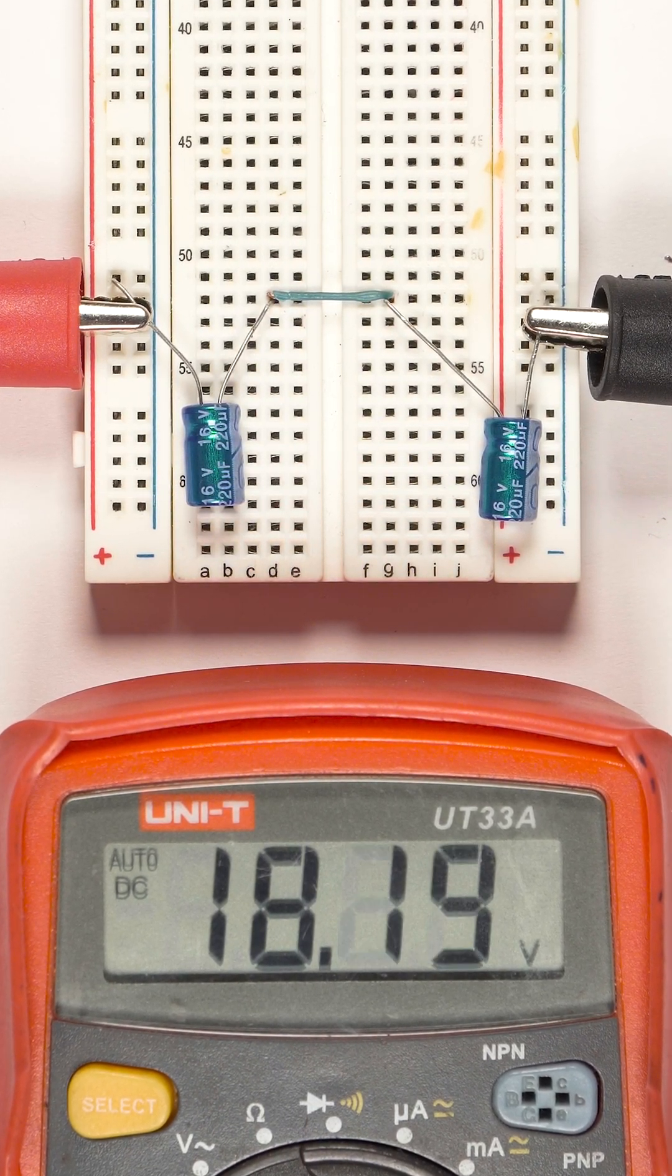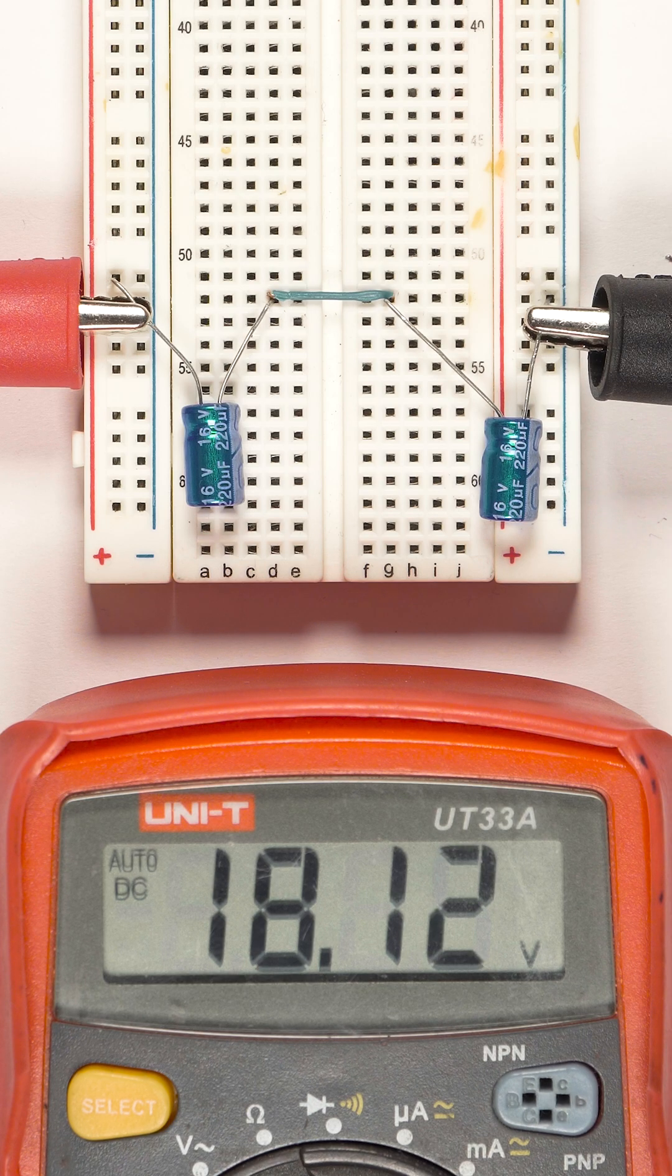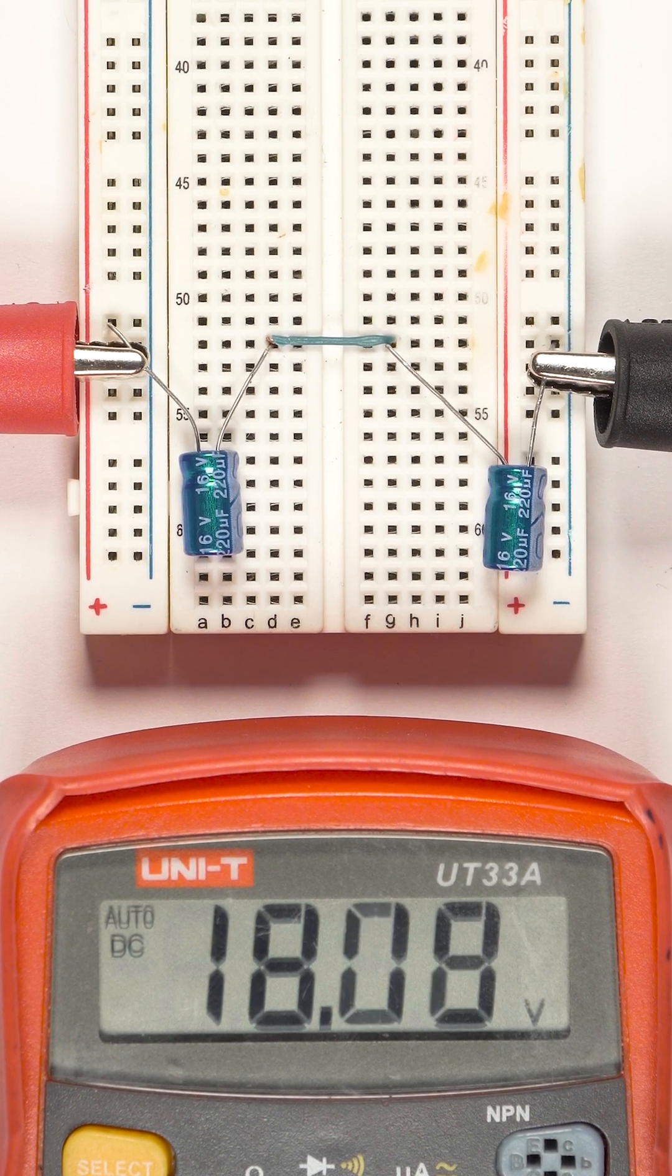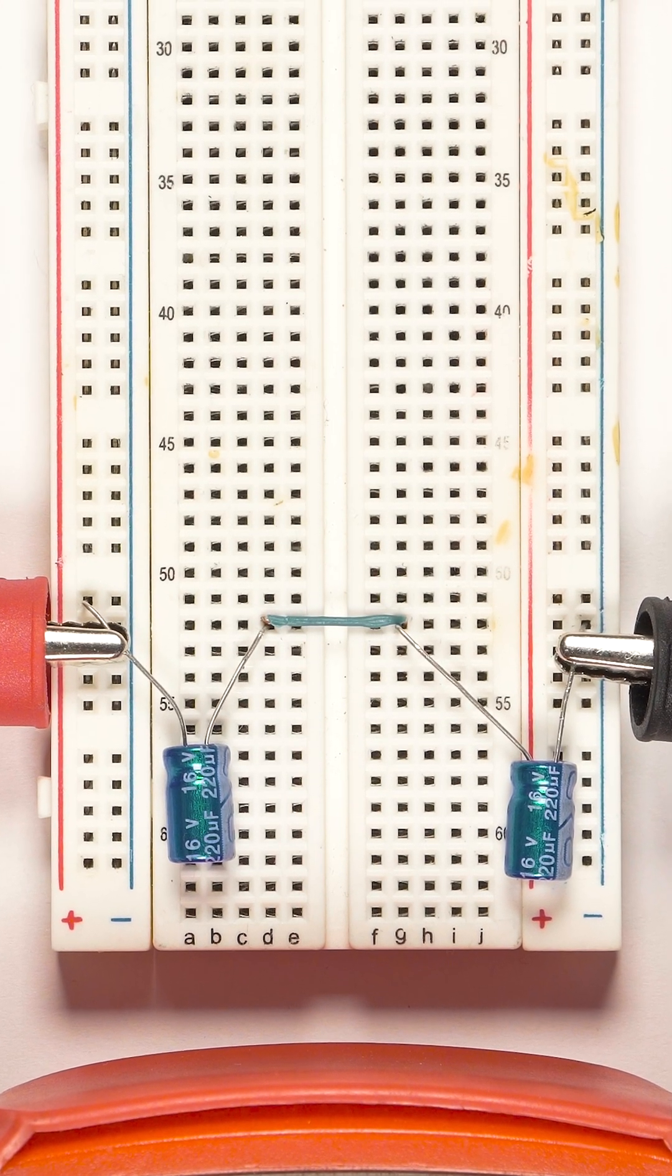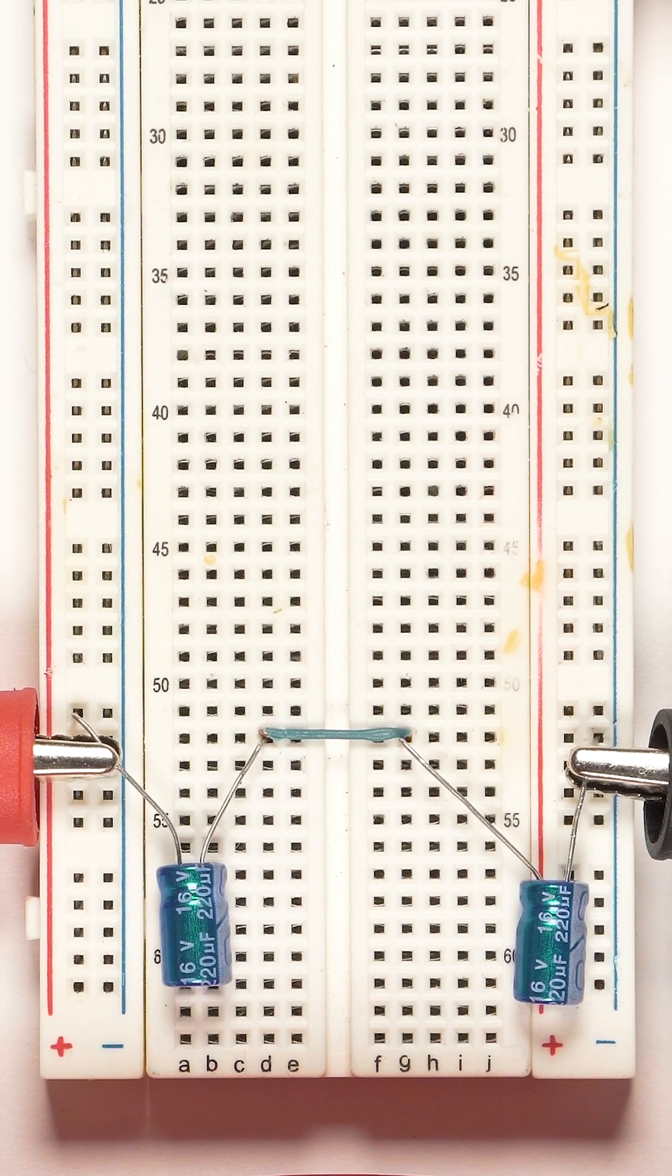But the voltage starts to drop once the battery is removed. So we have to come up with a circuit that routes AC to each of these capacitors in turns, recharging them.